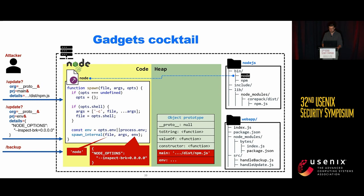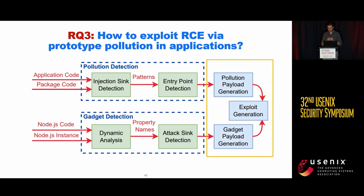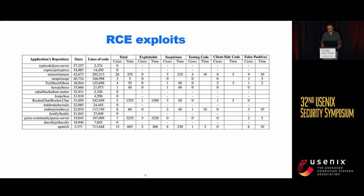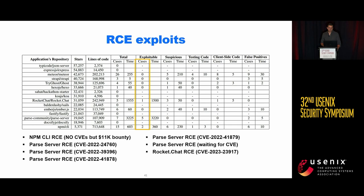The last research question is how to exploit real applications using our tools and detected gadgets. We crawled GitHub for Node.js apps and took the 15 most popular ones. We ran our tools and found some prototype pollution cases. The prototype pollution pattern is rare in practice, and manual verification was applicable for the total number of detected cases. We confirmed that eight detected cases are exploitable and reported them to maintainers.